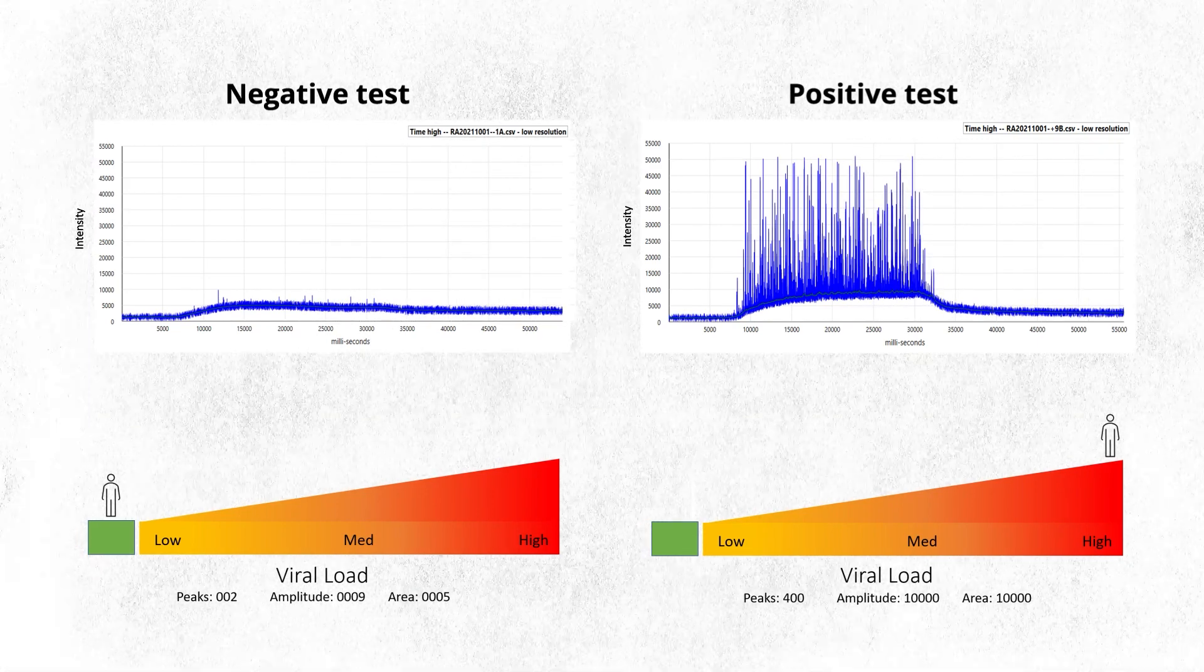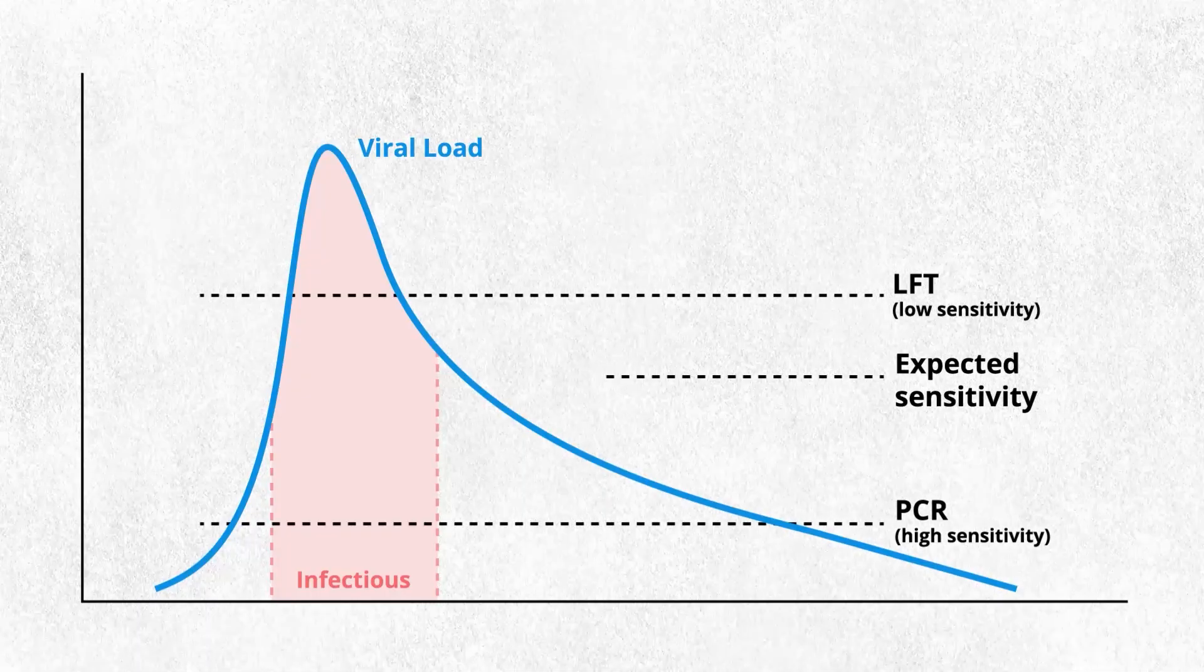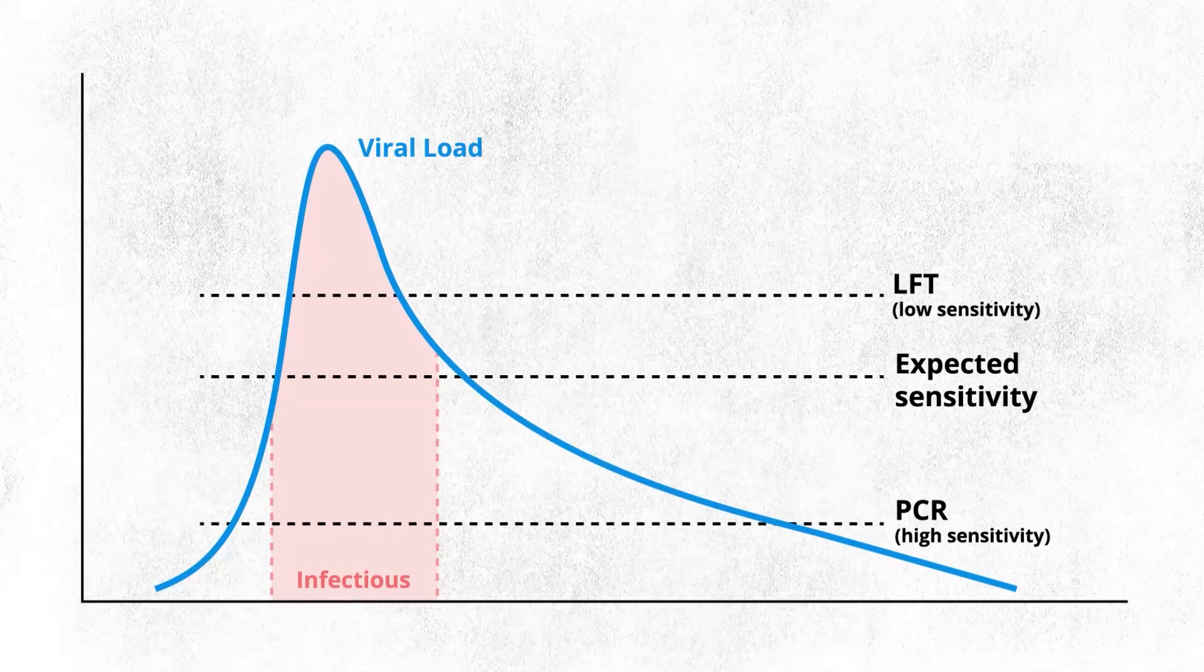It is significantly faster than the PCR test and does not require a lab environment. It is very sensitive and has a sensitivity approaching that of PCR, which means that it will detect people who are pre-symptomatic or who may not have a very high viral load.